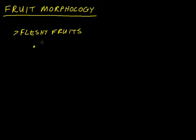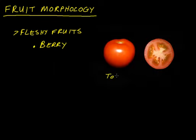First on the list are fruits known as a berry. Berries have a few to many seeds and they're usually quite juicy. A good example of a berry would be things like grapes or tomatoes. And tomatoes are indeed fruits.